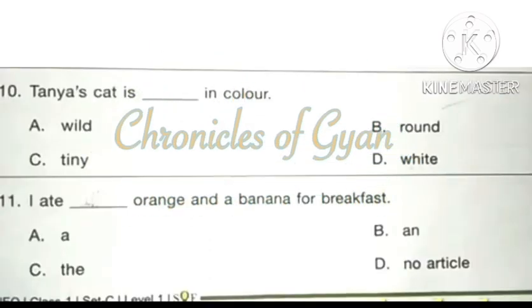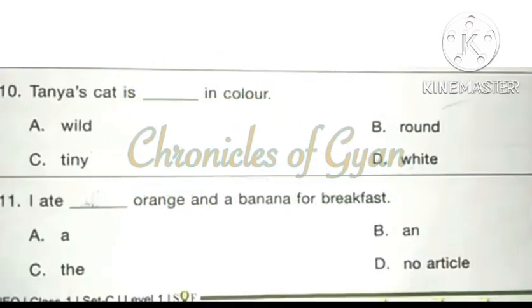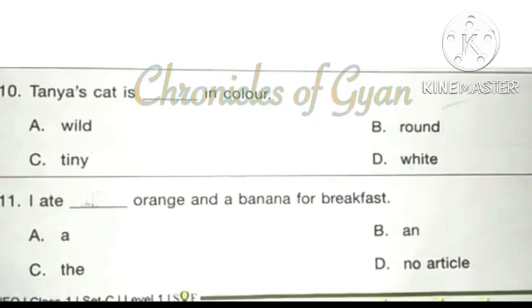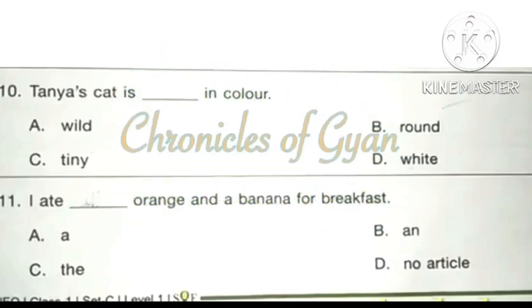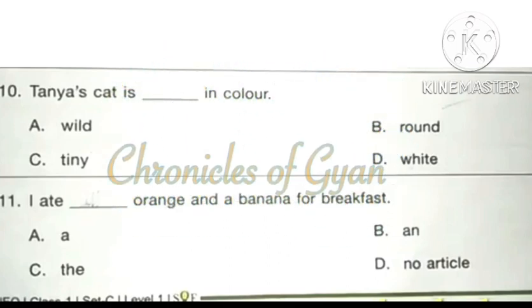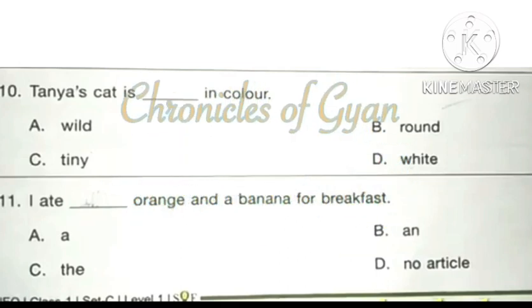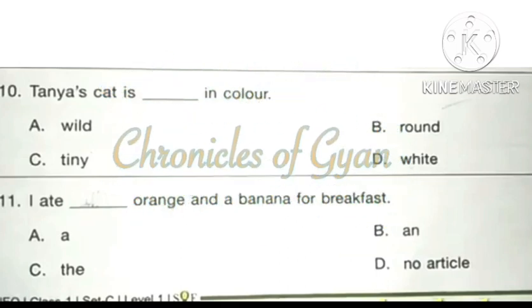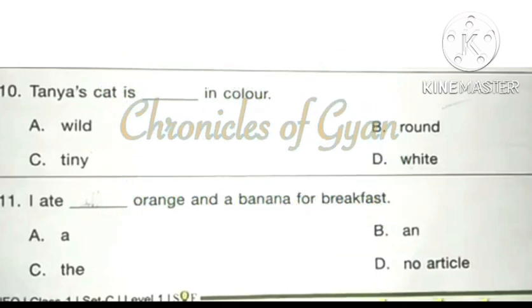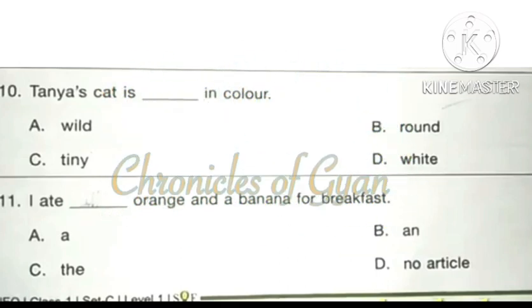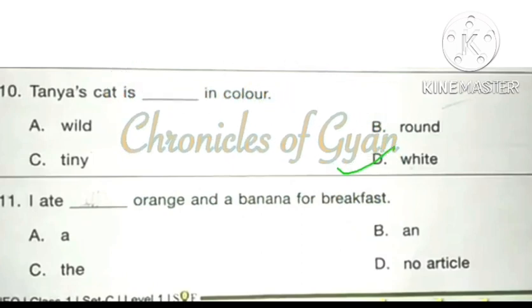Question 10: Tanya's cat is dash in color. Here we have to find the color of the cat. The only option that can be a color is option D: White. Tanya's cat is white in color.